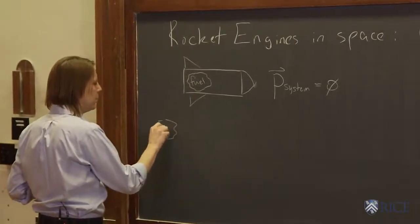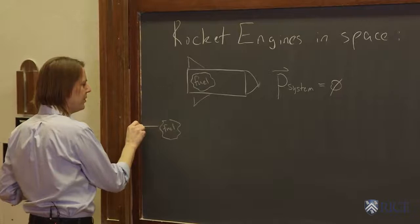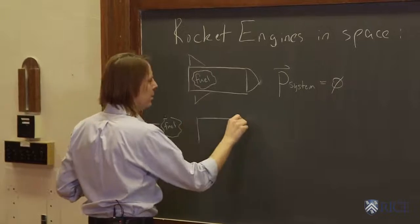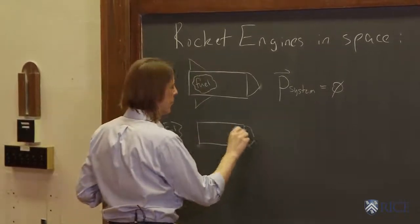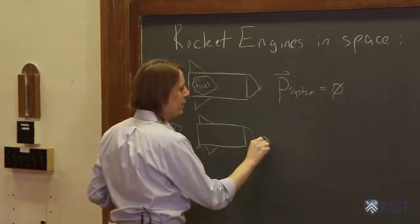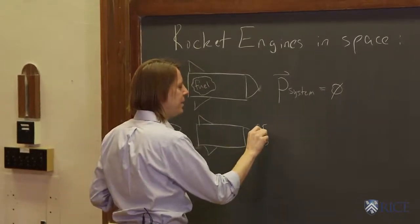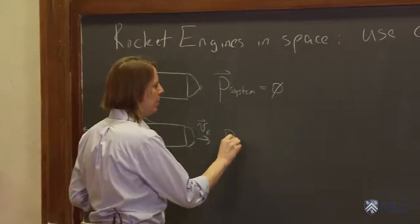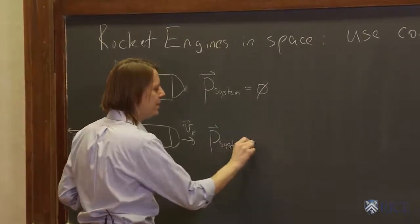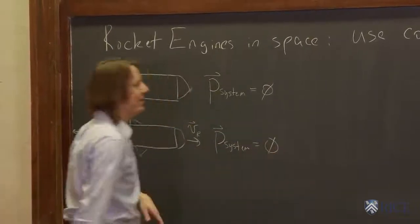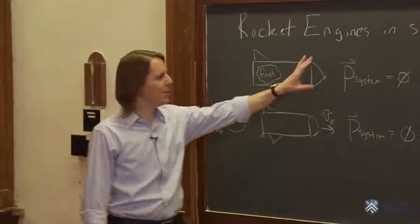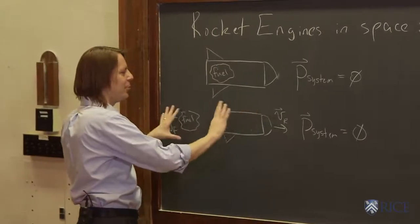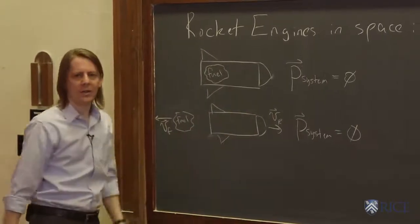Here's the fuel. It's moving very fast at V fuel and therefore the rocket ends up going this way at some speed V rocket due to conservation of momentum. The final momentum of the system is zero. Momentum has to be conserved. Since momentum is a vector, they can still cancel.